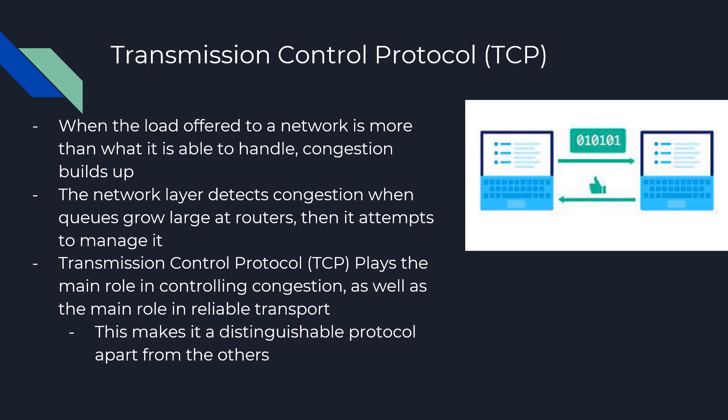To understand congestion control, we need to discuss what happens in the Transmission Control Protocol. When the load on a network is more than what that network is able to handle, that is when congestion takes place and builds up. The network layer detects congestion when queues grow large, mostly at routers, and then the network will attempt to manage it.